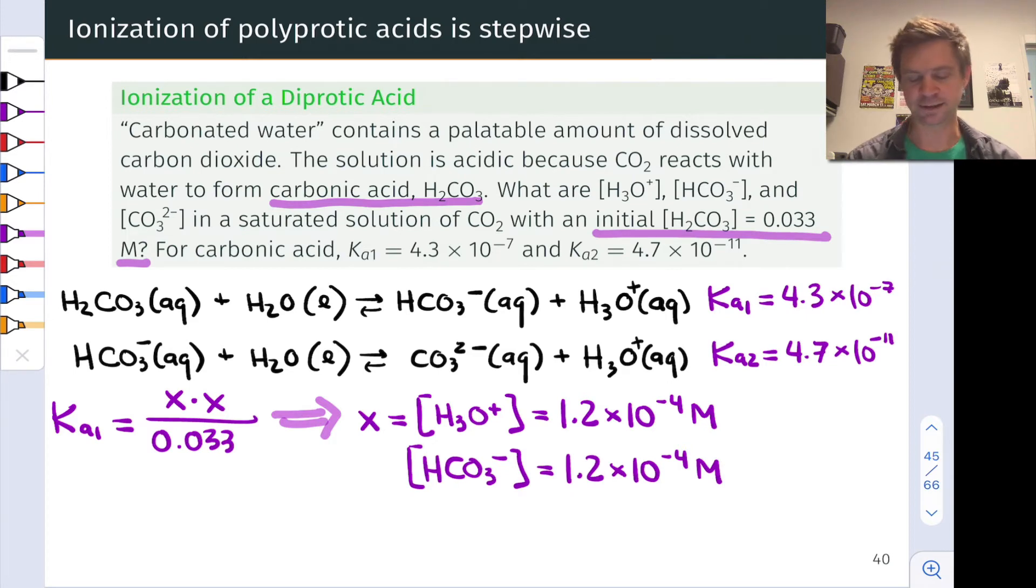The other thing we can see here is that because all of the bicarbonate, HCO3-, came from acid dissociation of H2CO3, and it's in a one-to-one mole ratio with H3O+, the molarity of bicarbonate is equal to the molarity of hydronium, also 1.2 times 10 to the negative 4 moles per liter.